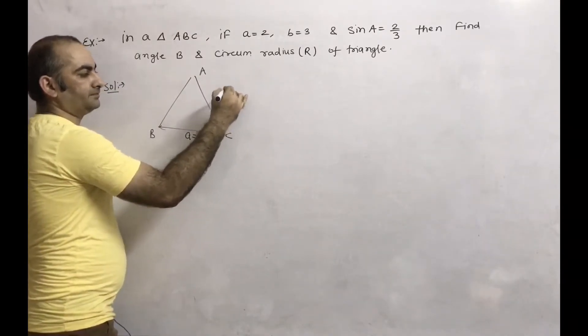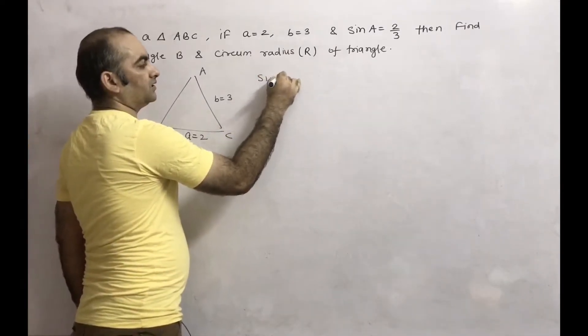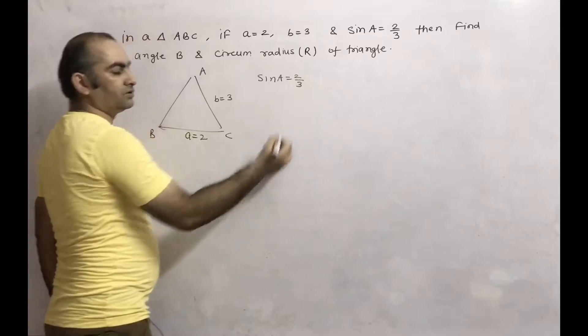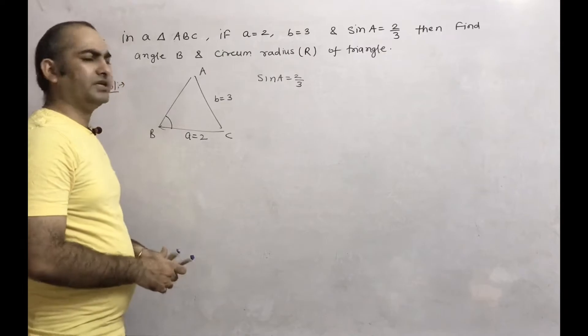Small b equals 3, and given is sine of A equals 2/3. We have to find out angle B and circumradius R. That is very simple. We know sine rule.